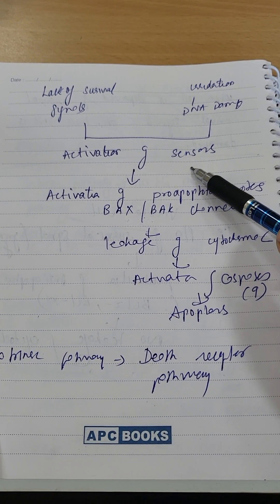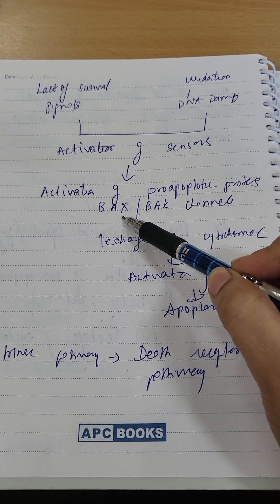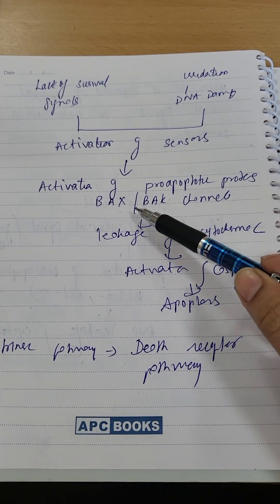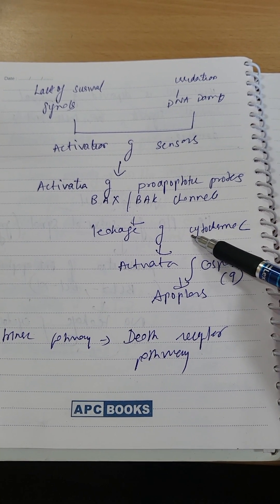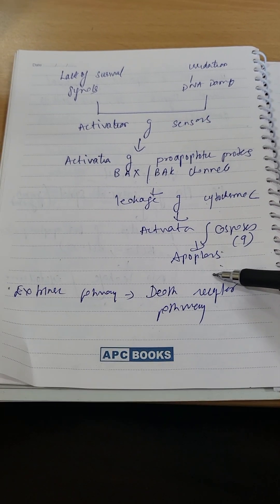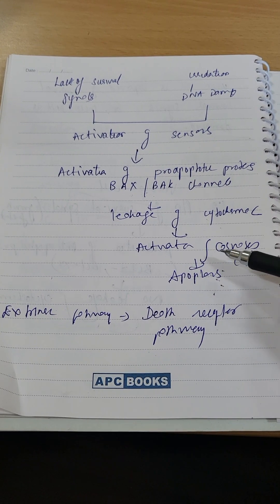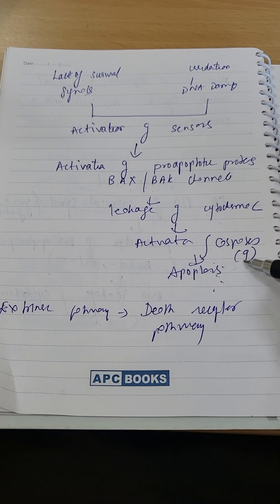Activation of sensors, activation of pro-apoptotic proteins which are favorable, like BAK and BAX. What will happen? Leakage of cytochrome C, activation of caspase 9, and it will lead to the process of apoptosis. Remember that the intrinsic pathway always activates caspase 9.